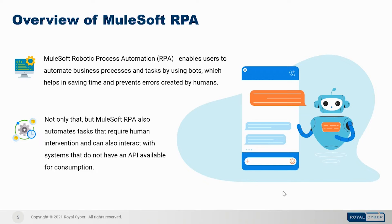In Sales Cloud, field organizations can automate the quote-to-cash process, streamlining sales operations and improving seller productivity. For Salesforce Industries, each industry has a set of tasks and specific workflows that can be automated through industry-specific bots and solutions. For example, using RPA with Financial Services Cloud, lending organizations can automate the loan approval process and subsequent processes related to loan disbursement and scheduling.